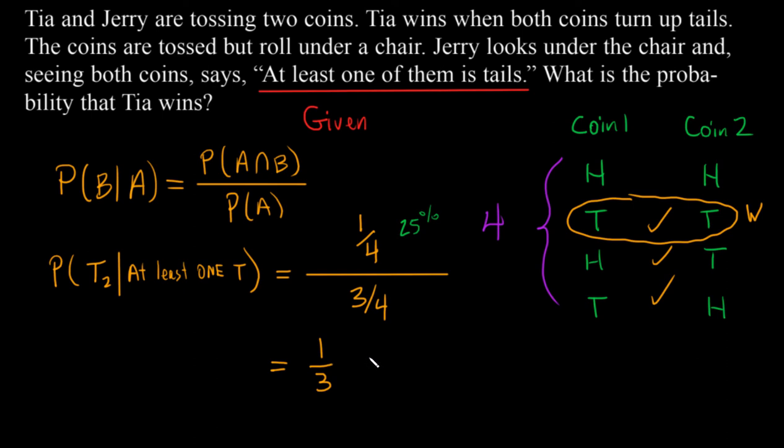But now, because we know at least one of them is a tail, she has a 33% chance of winning. Not a drastic increase, but an increase nonetheless. And so that's why the probability of this situation is one third.